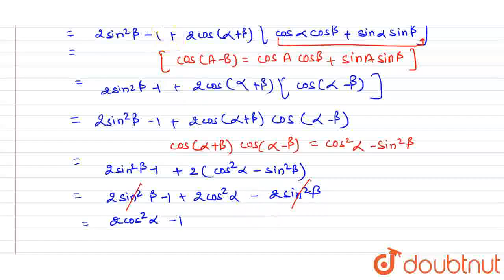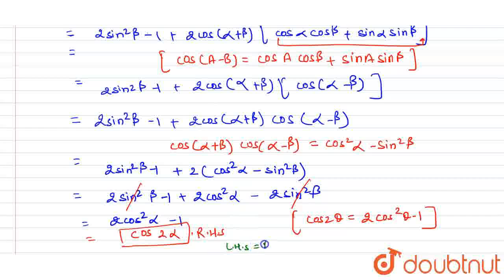We know that cos2θ = 2cos²θ - 1, so we can write this as cos2α, which is the RHS. Thus we have proved LHS equals RHS.